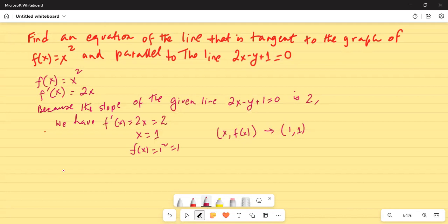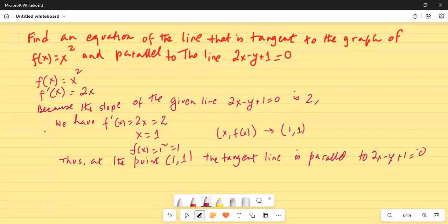Thus at the point (1, 1), the tangent line is parallel to 2x minus y plus 1 equal to 0.